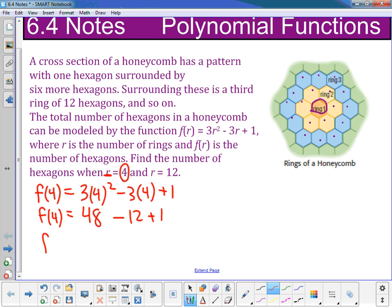And then I can go ahead and put all those together. 48 - 12 + 1 is 37. So I know that there's going to be a total of 37 hexagons when I get down to the fourth ring.